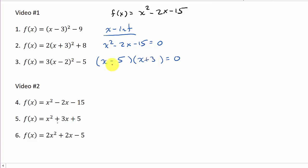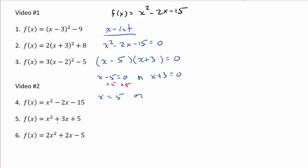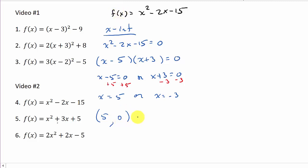We set each factor equal to zero and solve. For (x - 5) = 0, we add 5 to both sides: x = 5. For (x + 3) = 0, we subtract 3: x = -3. So our x-intercepts are (5, 0) and (-3, 0) — the y-coordinate is zero because we made y equal to zero.